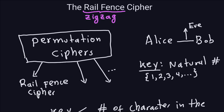The situation is the same: I have Alice and Bob that want to communicate, and Eve of course is always listening in. But before every communication starts, they have to agree on a key — they have to share a key, they have to agree on something. The key is the important part for the rail fence cipher, and in this case the key will be a natural number — just one of the numbers 1, 2, 3, 4, and so on.